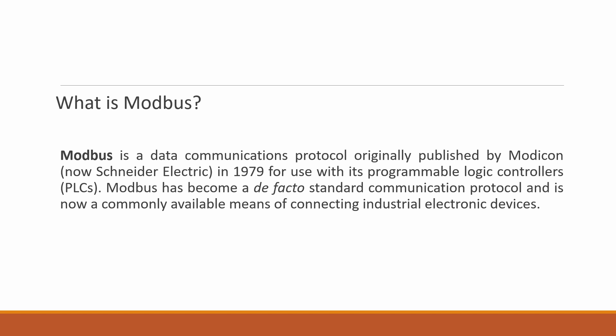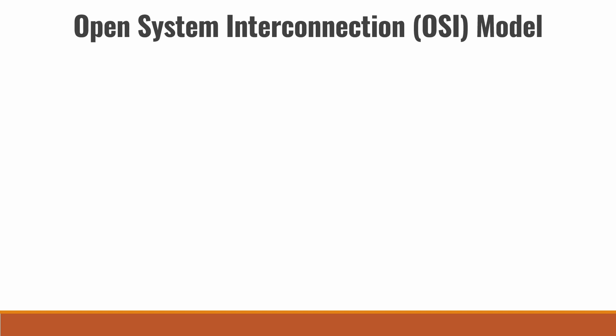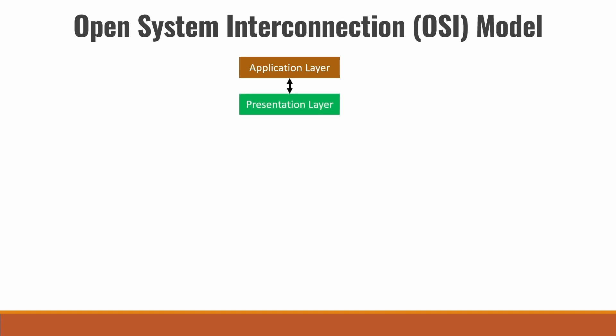Now let us begin with Modbus network layering. It is necessary to know about the Open System Interconnection model. The OSI model is used for computer network communication and has seven layers. The application layer contains protocols such as HTTP, FTP, SNTP, etc. Packets from the application layer are sent to the presentation layer, which handles services like encryption and decryption. Data regarding encryption and decryption are added onto the packets. The data then goes to the session layer, where information regarding authentication and authorization is added.